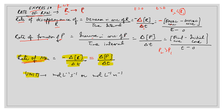The units of rate of reaction are moles per litre per second or moles per litre per minute for reactions in aqueous medium. If reactants and products are in the gaseous state, we use pressure, so the units are atmosphere per second or atmosphere per minute.